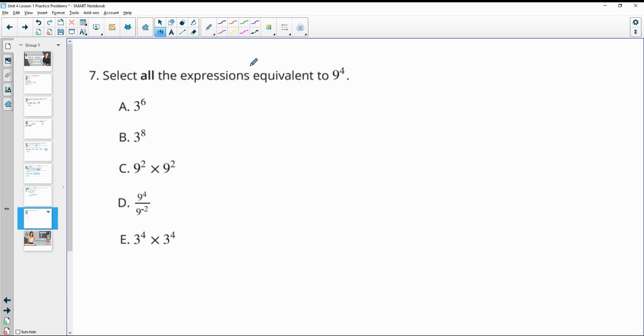Number seven: select all expressions equivalent to 9 to the fourth. And so we see a couple base 3s here. So I'm just going to rewrite this 9 as a base 3. So 9 is actually 3 squared. So then we have 3 squared to the fourth.